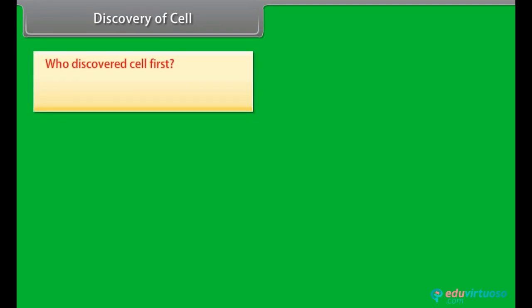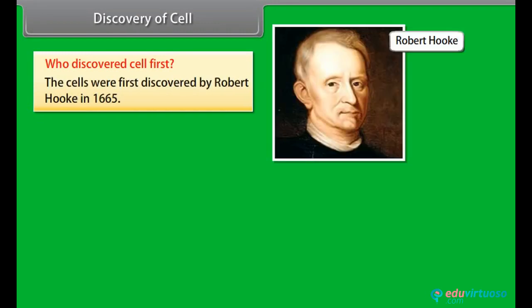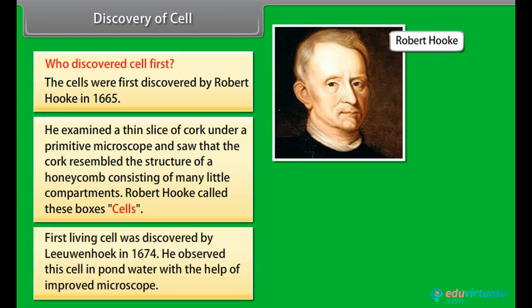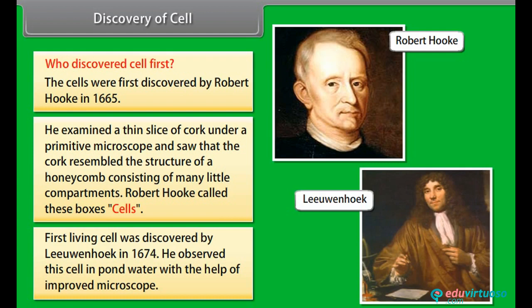Discovery of cell: Cells were first discovered by Robert Hooke in 1665. He examined a thin slice of cork under a primitive microscope and saw that the cork resembled the structure of a honeycomb, consisting of many little cell compartments. Robert Hooke called these boxes 'cells.' The first living cell was discovered by Leeuwenhoek in 1674, who observed this cell in pond water with the help of an improved microscope.